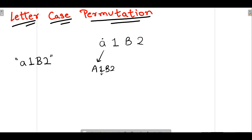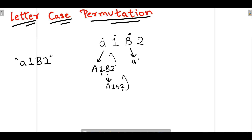We come to the next character — it's '1', not a letter, so we do nothing and move on. The next character is capital B, which is a letter, so we change its case, converting it to small b, giving us 'A1b2'. Then we move to '2', which is not a letter, so we do nothing and return. We backtrack and now handle the capital B character — since it's uppercase we convert it to lowercase, giving 'a1b2'.